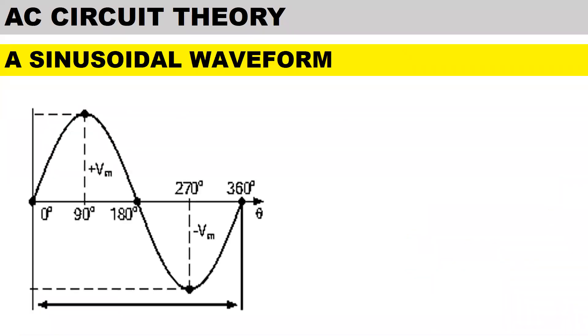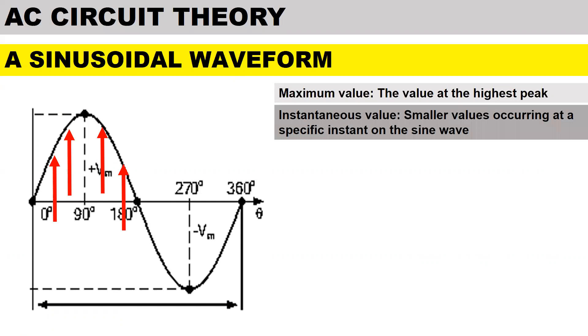To draw and fully label a sinusoidal waveform we have the maximum value which is the value at the highest peak. The instantaneous value are smaller values occurring at a specific instance on the sine wave.